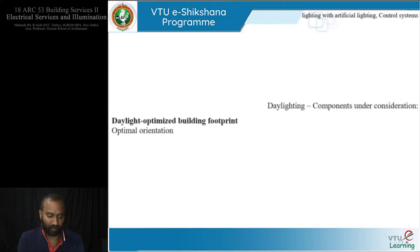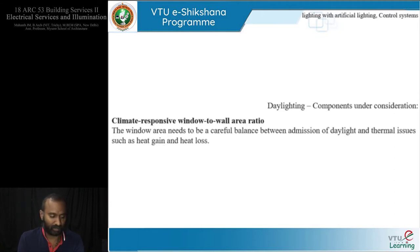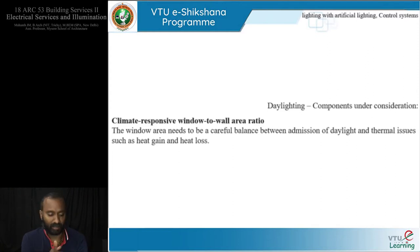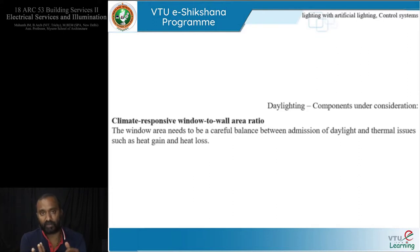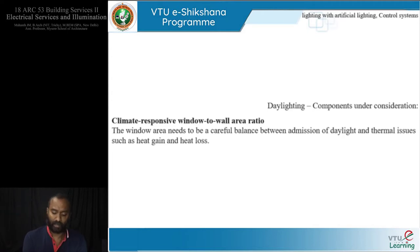Taking daylight-optimized building footprint, it supports the optimal orientation. For climate-responsive window-to-wall ratio, the window needs a careful balance between admission of daylight — because the moment you have an opening in your building, it is going to invite heat. So there are going to be heat gains and heat losses that have to be carefully planned. From a lighting perspective, if you borrow too much daylight and direct sunlight radiation comes in, it causes over-brightness and also glare. This has to be an important factor in considering your daylighting components.